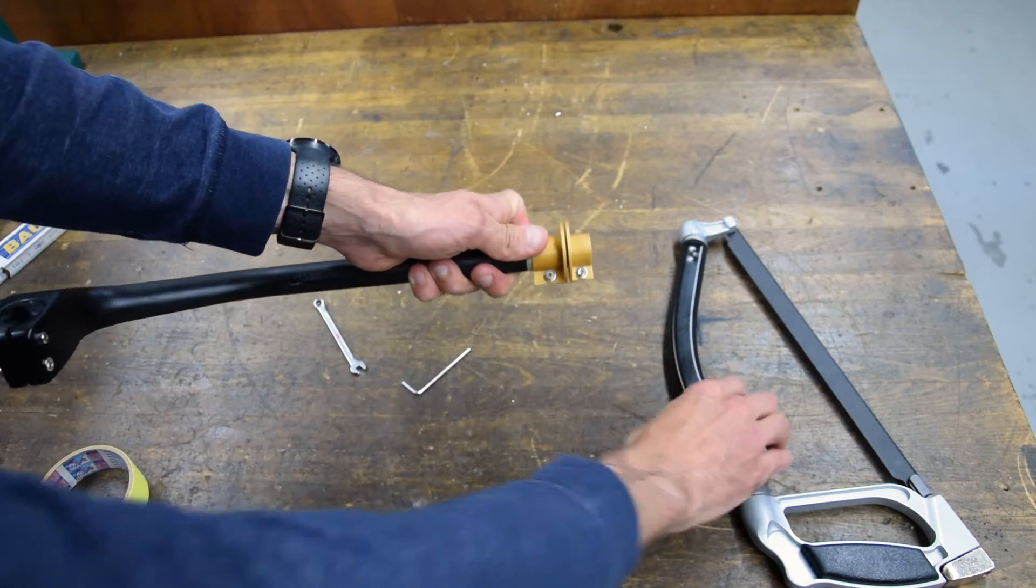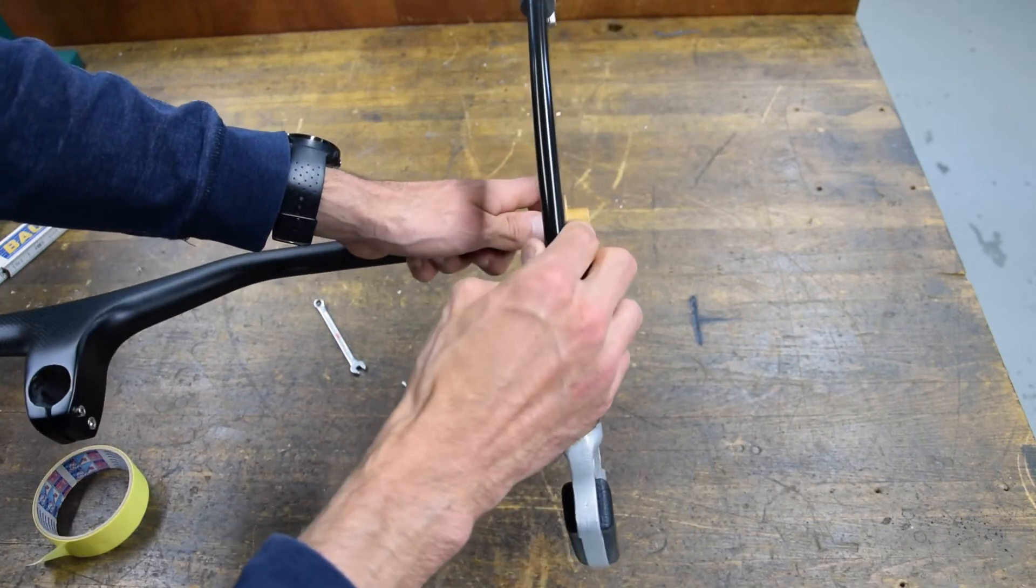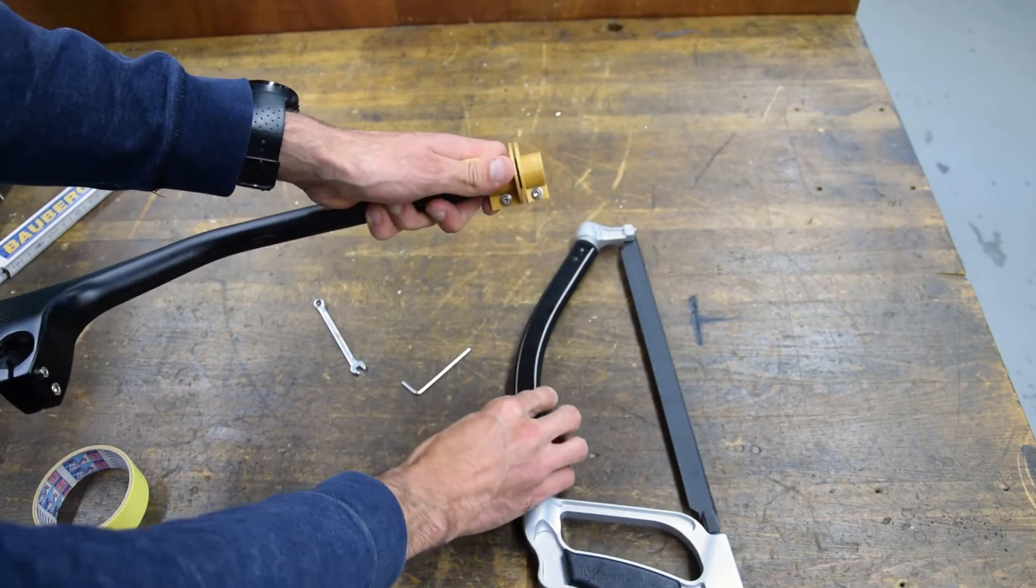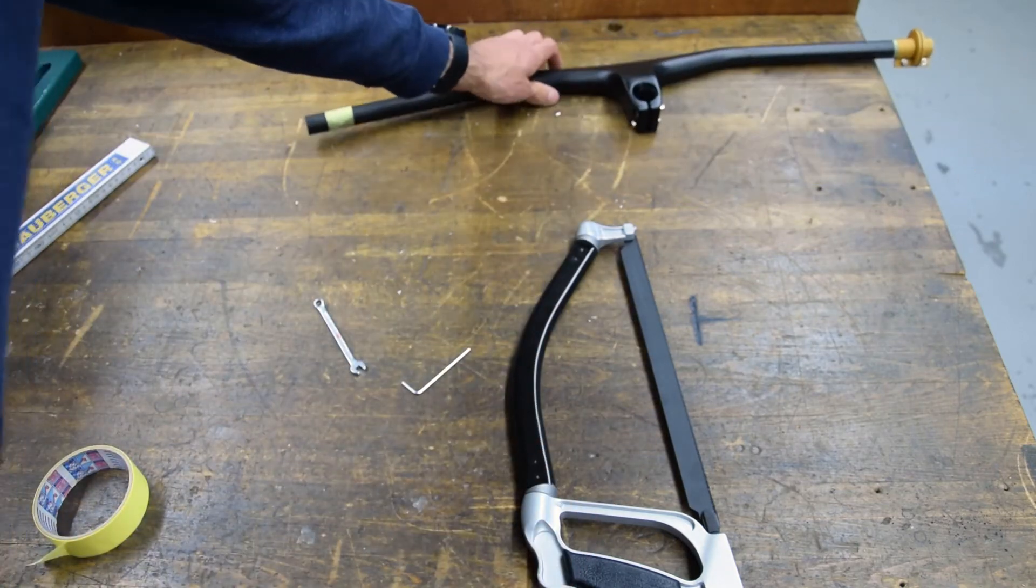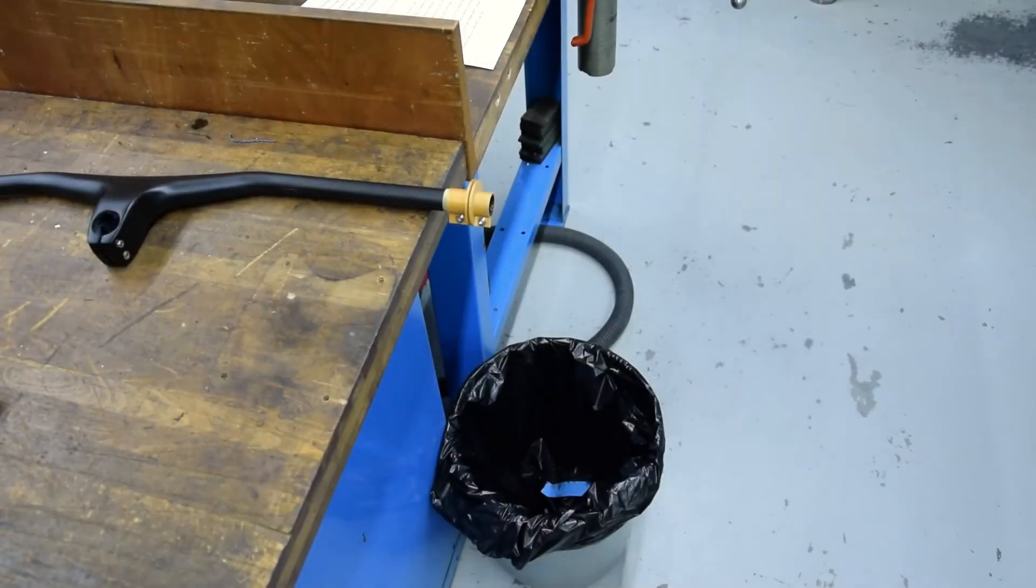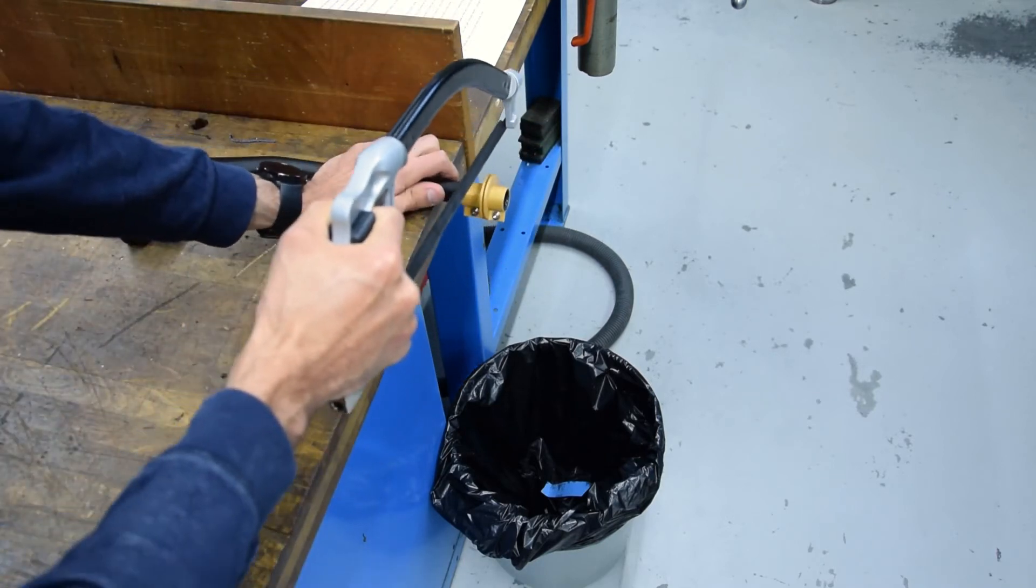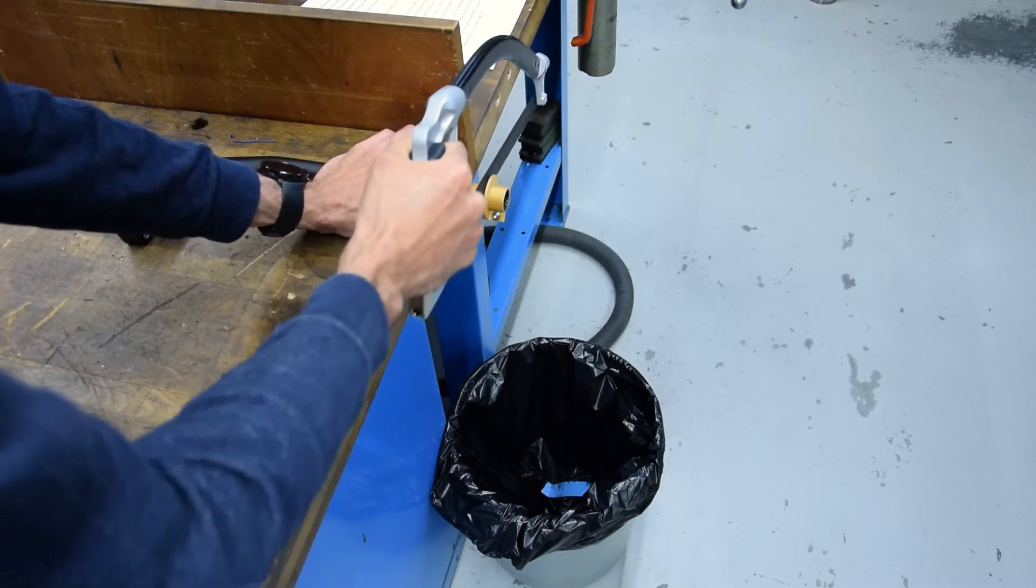We have now a very rigid cutting guide with exactly the thickness of the blade. And now let's cut the handlebar on this side. So it is very important to cut it very gently. I hold it down firmly and then very gently cut.